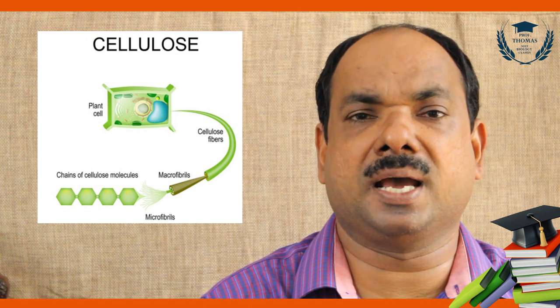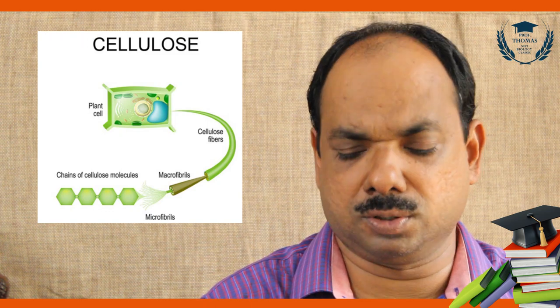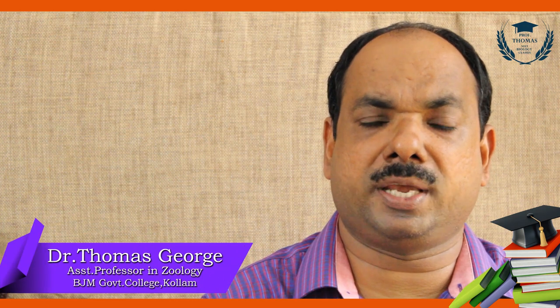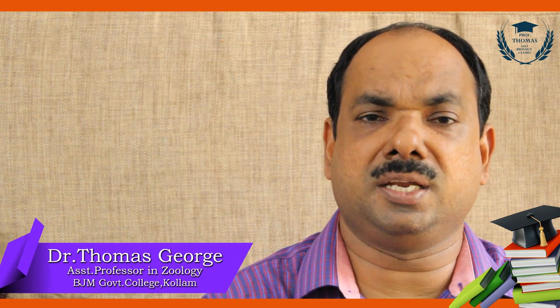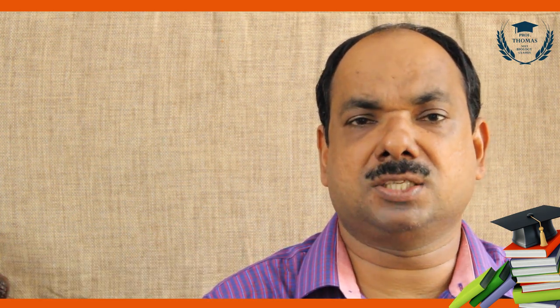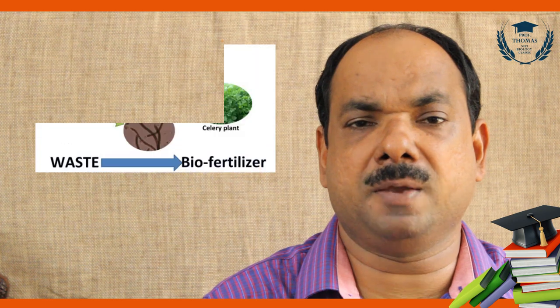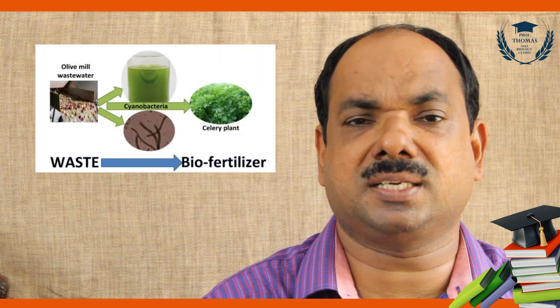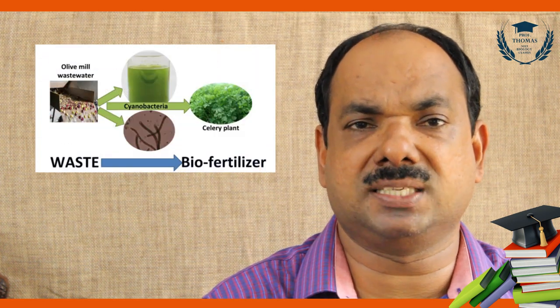The cell wall of higher plants is made of cellulose. Cyanobacteria such as Anabaena and Nostoc increase the fertilizing capacity of the soil. In paddy fields, they act as biofertilizers.